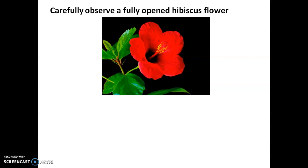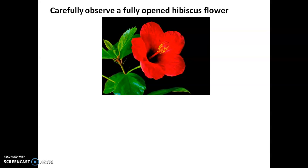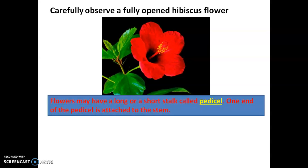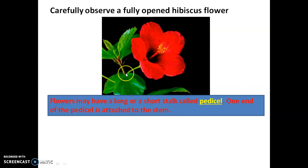Observe carefully a fully open hibiscus flower. Hibiscus or shoe flower, children, you can see in your surroundings. So if possible, please pluck one flower and see the following parts carefully. A flower may have a long or a short stalk called pedicel. This green color part, children, you can see — this is a stalk that is called pedicel.